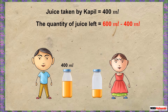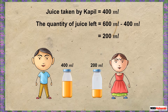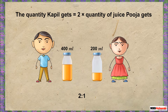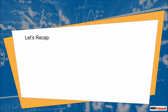Since 400 ml of juice is taken by Couple, the quantity of juice left is 600 ml minus 400 ml, which equals 200 ml — the same as Puja's share. So to divide a quantity in a given ratio, find the amount for any one term and subtract from the total to get the other. Notice that Couple gets twice the juice that Puja gets, matching the given ratio of 2:1. This can be used to verify your answer.